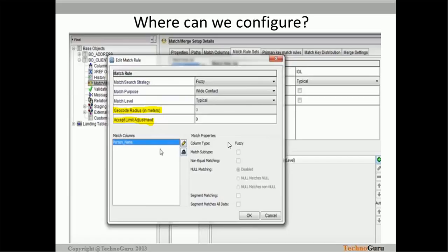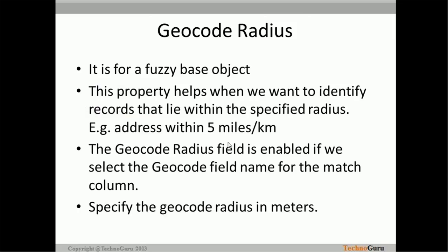When you create a fuzzy match rule, you get a pop-up where you have to provide the match and search strategy — for example, fuzzy. Then you provide the match purpose, whether it's a person, individual, organization, or address. Then you provide the match level: typical, conservative, loose, etc. There are two properties: geocode radius, which is in meters, and accept limit adjustment, which is an integer property.